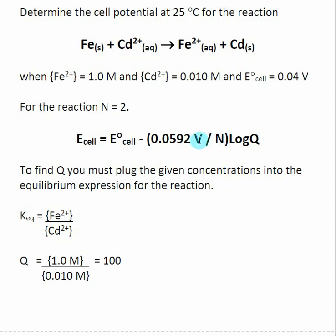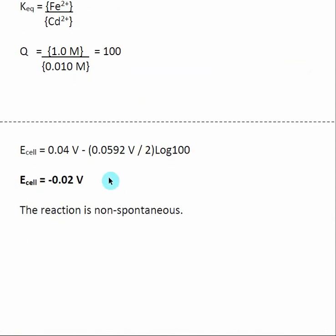We plug those numbers into our Nernst equation. We have N equals 2 and Q equals 100. We get Ecell equals negative 0.02 volts.